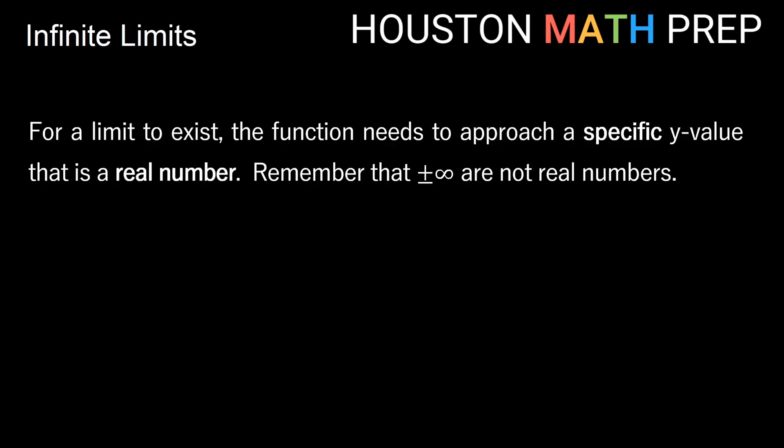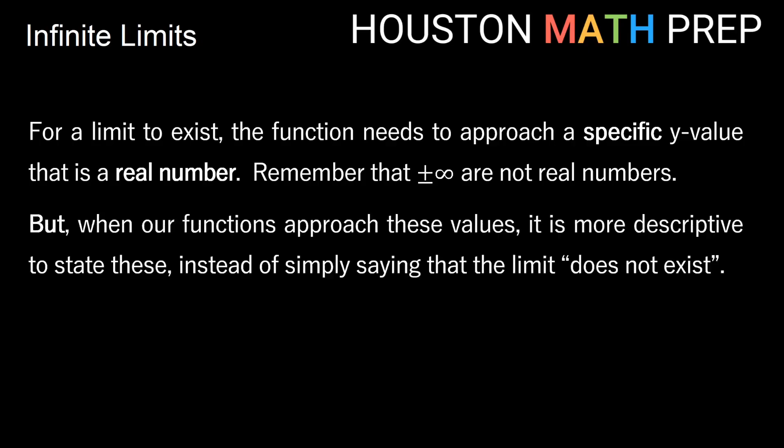Remember that positive and negative infinity are not actually real numbers. But when functions approach these values, it's more descriptive to state positive or negative infinity rather than just saying the limit does not exist. The limit may not exist because we go to different values, but if we're going off to an infinite value, even though it's not a real number and the limit does not exist, it provides more description to say positive or negative infinity. We'll still note that the limit does not exist, but then we'll have a reason why.